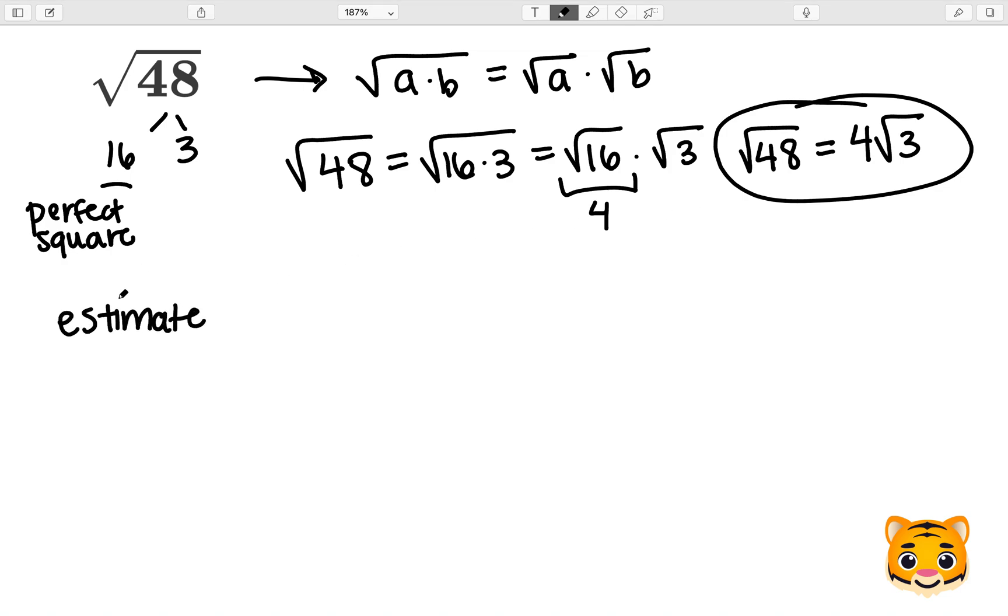However, if we want to estimate the square root of 48 to the nearest whole number, we can take a look at perfect squares near this value. 6 squared gives us 36, and 7 squared gives us 49.